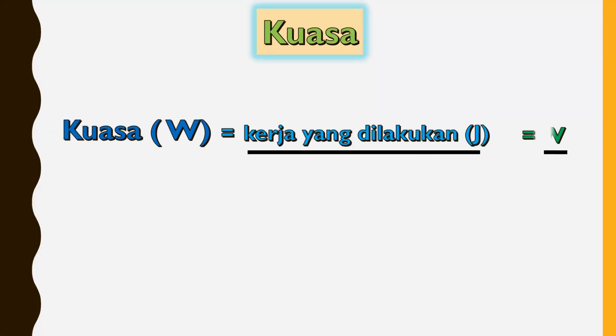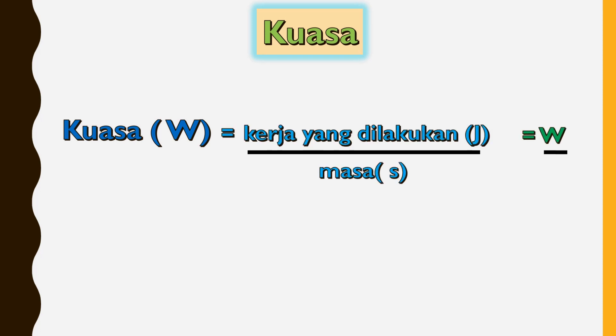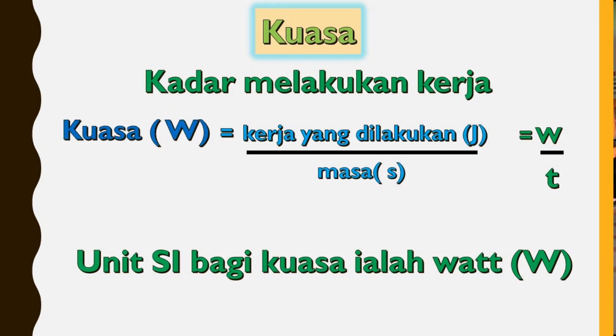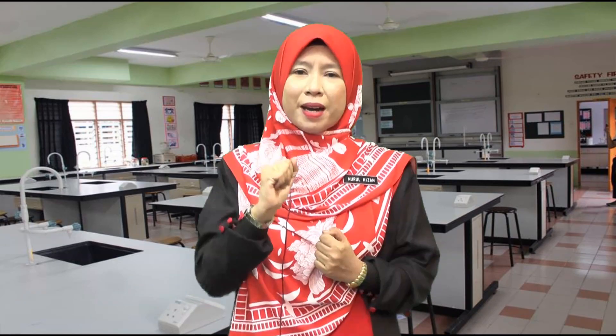Sekarang murid-murid, kita akan meneruskan pembelajaran dengan mempelajari tentang kuasa. Kuasa ditarifkan sebagai kadar melakukan kerja. Formula bagi menghitung kuasa ialah: Kuasa sama dengan kerja yang dilakukan dibahagikan dengan masa, P = W/t. Unit SI bagi kuasa ialah Watt. Satu Watt bersamaan satu Joule kerja yang dilakukan dalam masa satu saat.